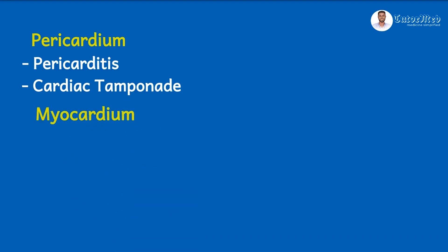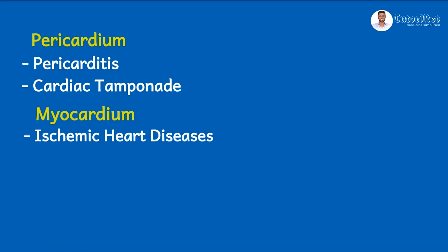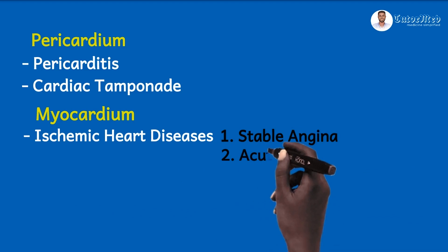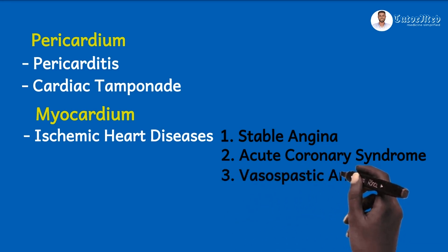For the myocardium, diseases can be grouped into ischemic heart diseases. The conditions we can learn here are: stable angina pectoris, and acute coronary syndrome — which is a spectrum of three conditions: unstable angina pectoris, non-ST elevation myocardial infarction, and ST elevation myocardial infarction. We can also have vasospastic angina here, which is the new term for Prinzmetal angina or variant angina.